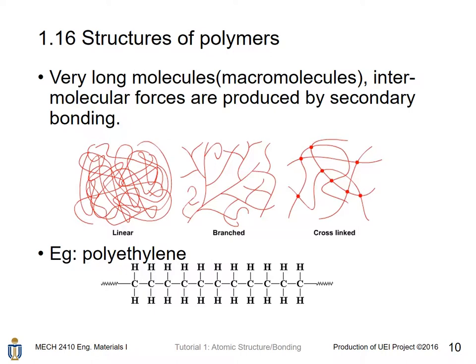Polymers consist of very long molecules called macromolecules, and the inter-molecular forces are produced by secondary bondings. There are several different arrangements of these long molecules — linear, branched, or cross-linked. These long molecules are formed from small single molecules called monomers. Through polymerization, monomers react to form macromolecules that are very long and self-repeating.